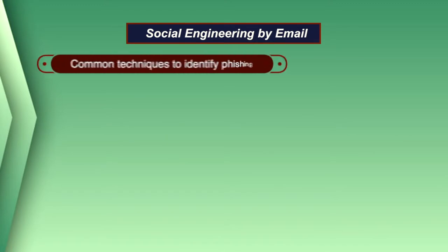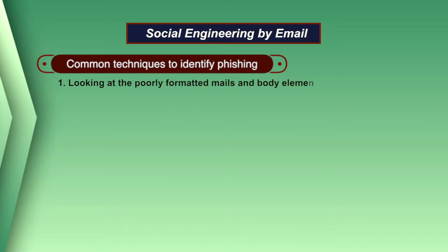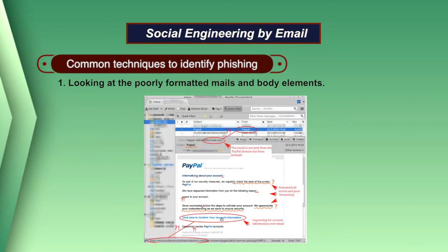Now we will discuss some common techniques to identify phishing. The first technique is to look at poorly formatted mails and body elements. A common practice of many hackers is to use misspelled words on purpose. While it may seem this would easily reveal an illegitimate email, it is actually a tactic used to find less savvy users. Spammers have learned that if they get a response from a poorly written email, they are onto an easy target.